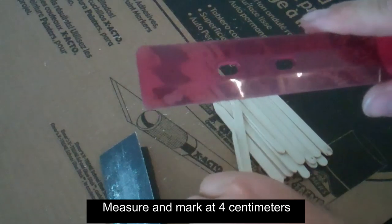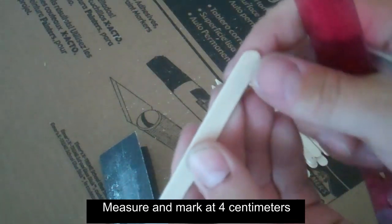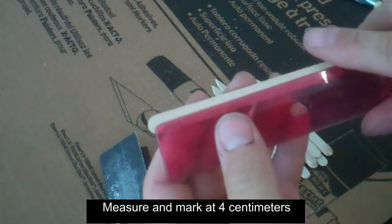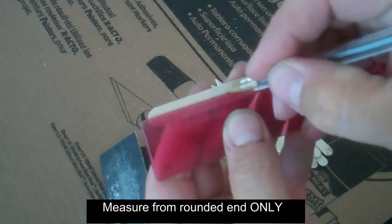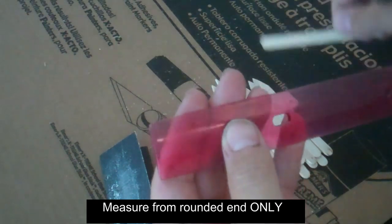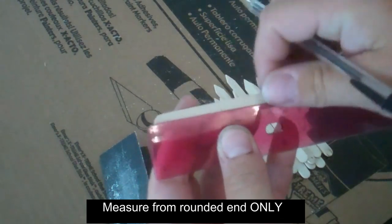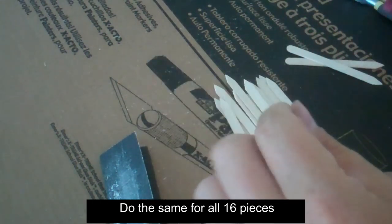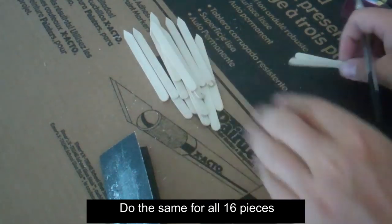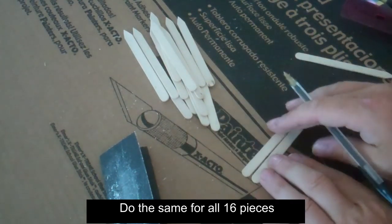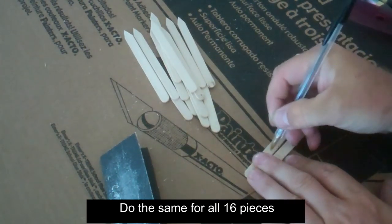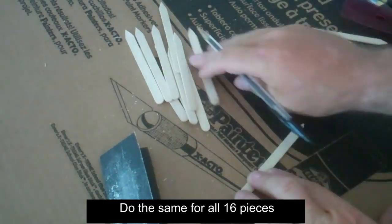Next, take a ruler and measure four centimeters from the round side to make a small mark on the stick. Do this on all 16 sticks. You can cheat by just lining them up and copying the same mark on all of the sticks so you do not have to measure each one out.